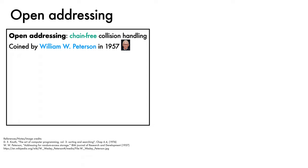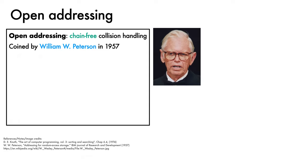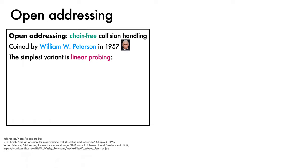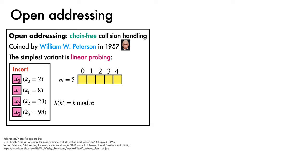An alternative approach to chaining is to use open addressing, a terminology that was coined by William Wesley Peterson in 1957. The simplest variant of an open addressing scheme is linear probing, which remaps each colliding hash to the next available index. To see how it works, let's return to our hash table with five slots, our division hash function, and the task of inserting four elements into the table. Insertion of x0 with key 2 goes into slot 2 as before. Object x1 with key 8 goes to slot 3. Object x2 with key 23 also maps to slot 3. Since this slot is taken, we examine the next slot and, finding it free, insert x2 there.